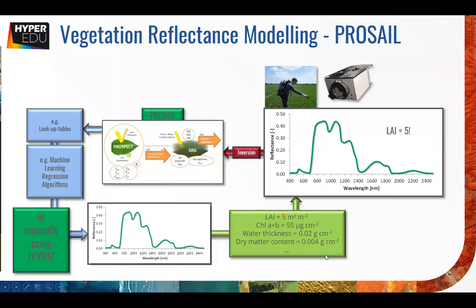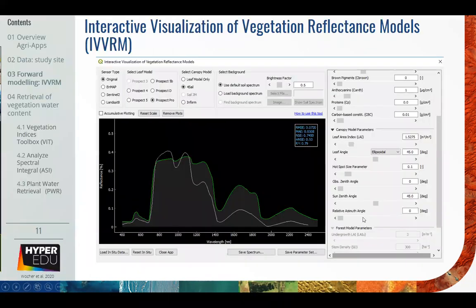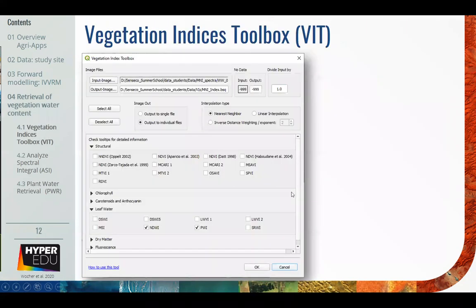This is the perfect set and now you know why it is not that easy to achieve this. What we're going to do now is switch over to the water content retrieval. First we're going to use the index toolbox - I'm going to go back to the ENMAP box and close the IVVIM tool.